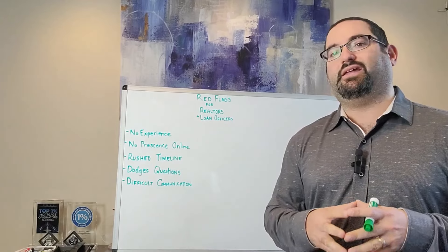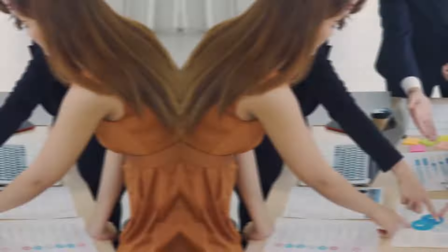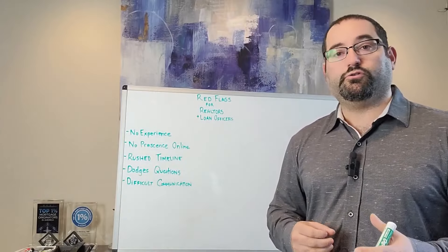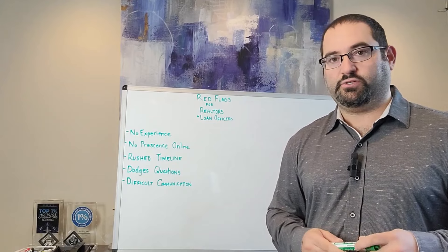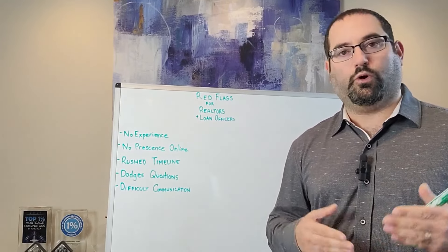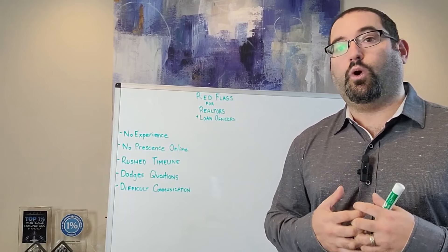I hope that this lesson has given you some knowledge and insight on the red flags to be looking for or to be making sure that your lender or realtor doesn't possess these items. Because the person you're working with, you want to make sure doesn't have these issues. It's going to make it a smoother process for you. It's going to make it an easier process. And it's also going to make sure that the person or people that you're working with have your best interests in mind.